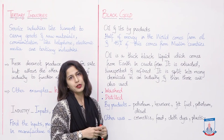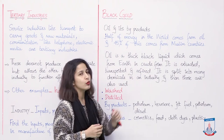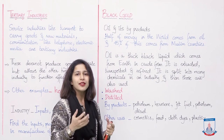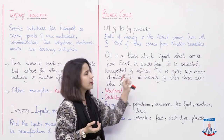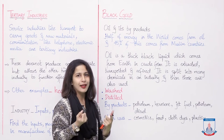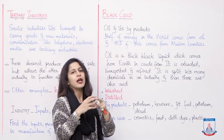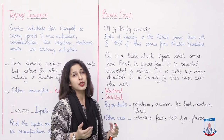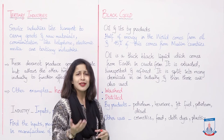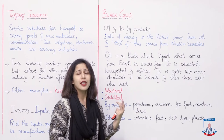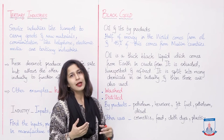So this black gold — ye humein kis form mein milta hai? It is a thick black liquid which comes from the earth in crude form. Ye ek kala thick liquid hai jo humein zameen se isi tarah milta hai aur isko hamari zameen mein paya jata hai. It is extracted, transported, and refined. Isko hum primary industry use karke wahan se nikalte hain — extract karte hain — phir isko transport karte hain, which is a tertiary industry, service providing. Hum isko uski nikalne wali jagah se lekar us industry tak le jaate hain jahaan pe humein isko use aur clean karna hota hai.